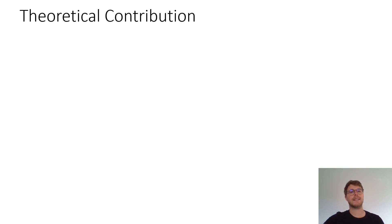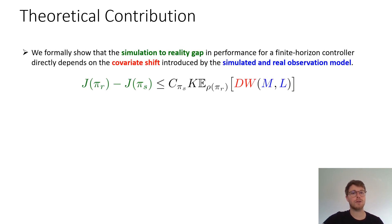Training a sensorimotor policy purely in simulation and deploying it on a real platform requires bridging the sim-to-real gap. In this work we formally show that the simulation-to-reality gap in performance is upper bounded by the covariate shift introduced by the simulated and the real observation models.